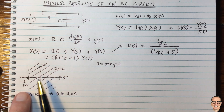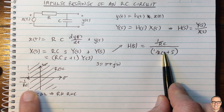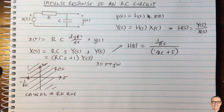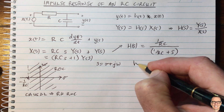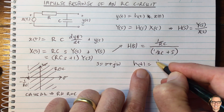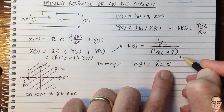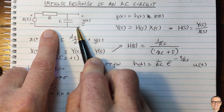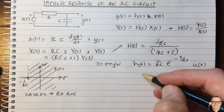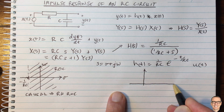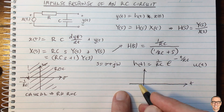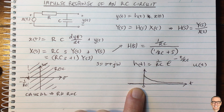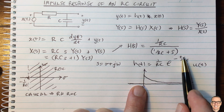Using the known region of convergence, we look up the standard Laplace transform table for the form 1/(A + S), where A = 1/(RC). The impulse response H(t) equals (1/RC) times the exponential of −t/(RC), times the unit step function. Plotting this, it is zero for negative time and then a decaying negative exponential for positive time, with a rate of decay of 1/(RC).